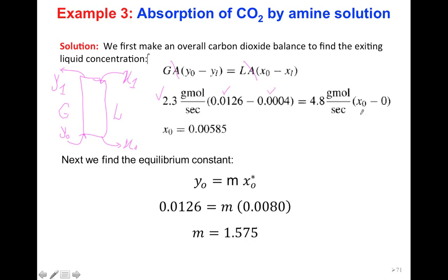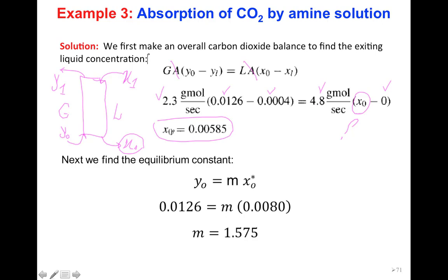At the bottom y0 = 0.0126, at the top y1 = 0.0004 — this is the change in the gas phase. For the liquid phase, at the top x1 = 0 (pure amine). The only unknown in the balance is x0. Solving, we get x0 = 0.00585.